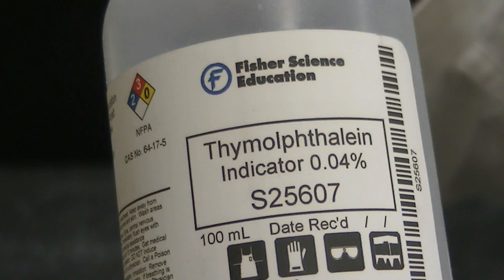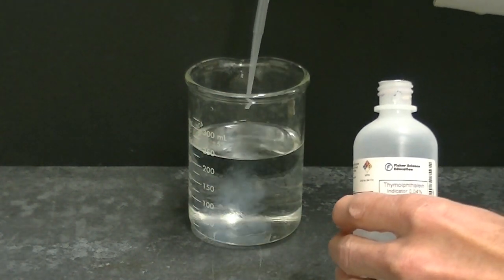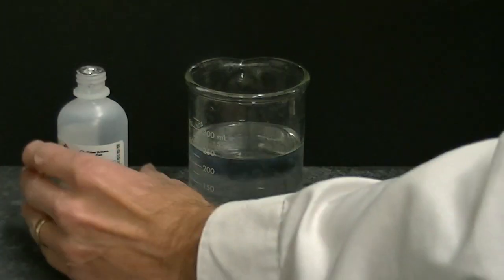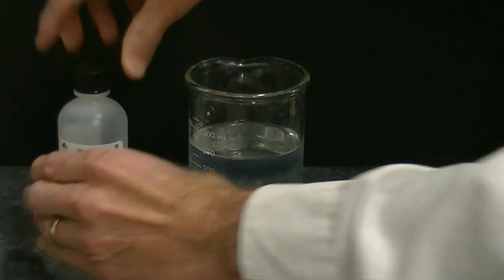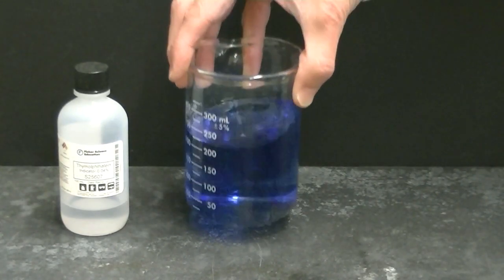What's the science behind the color change? Well, the cleaner contains a dye called thymothaline. Thymothaline is an acid-base indicator. It's colorless in an acid such as is in this beaker. However, it's blue in a base. Let's add some base to the beaker to see what happens. As expected, a blue color develops.